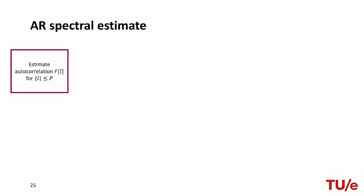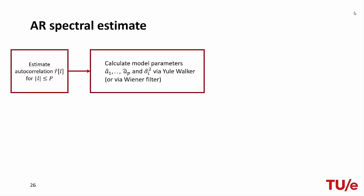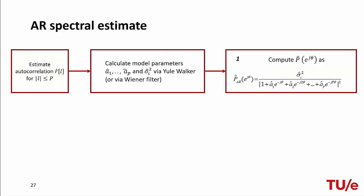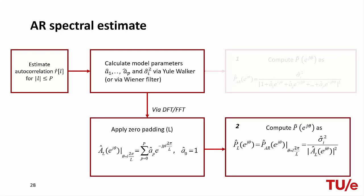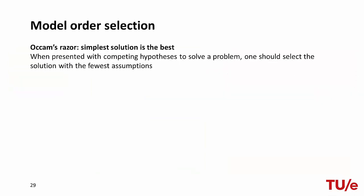To review the procedure for autoregressive spectral estimation: we start by estimating the autocorrelation from the observed signal for P+1 lags (lags 0 to P). Then we estimate the model parameters either via Yule-Walker or Wiener filtering. We can then obtain the power spectral density in two ways: by plugging the estimated coefficients directly into the known AR power spectral density formula, or — as typically implemented in software like MATLAB — by calculating the Fourier transform of the filter denominator with zero-padding for better visualization, then applying the same formula. However, this procedure skips an important step: the choice of model order.